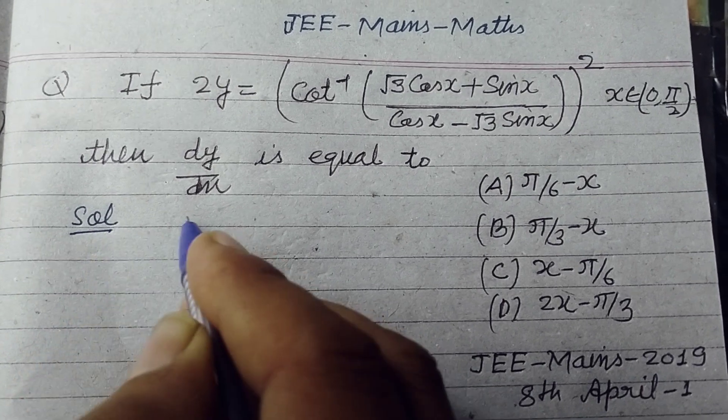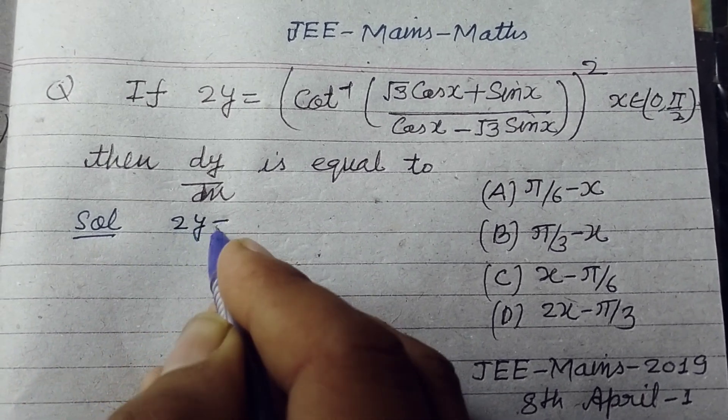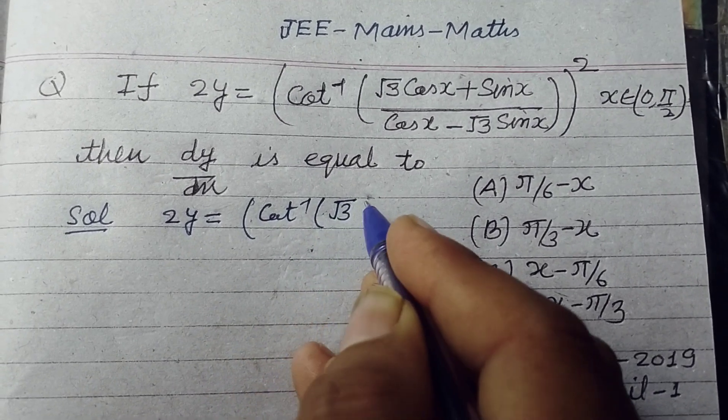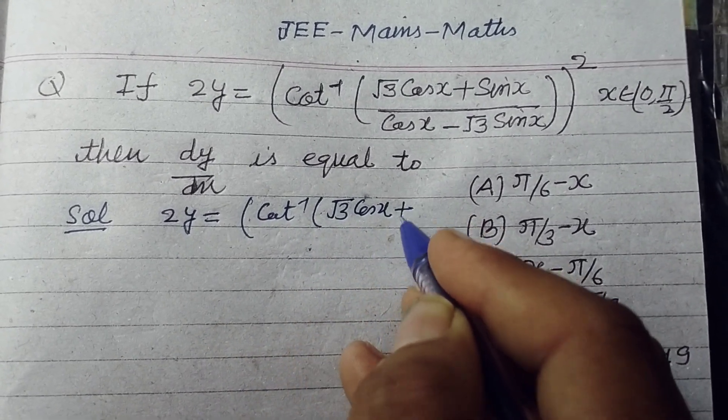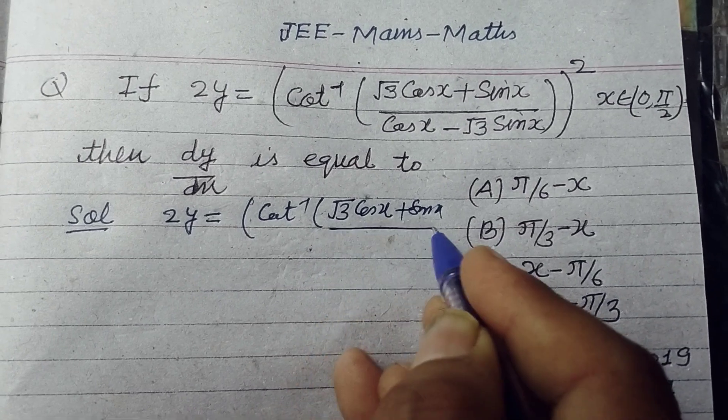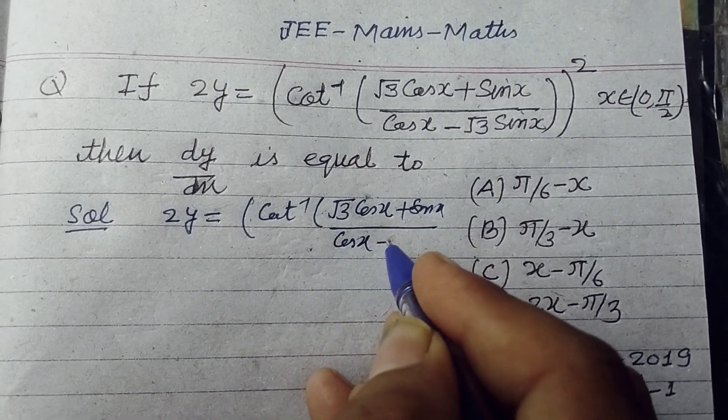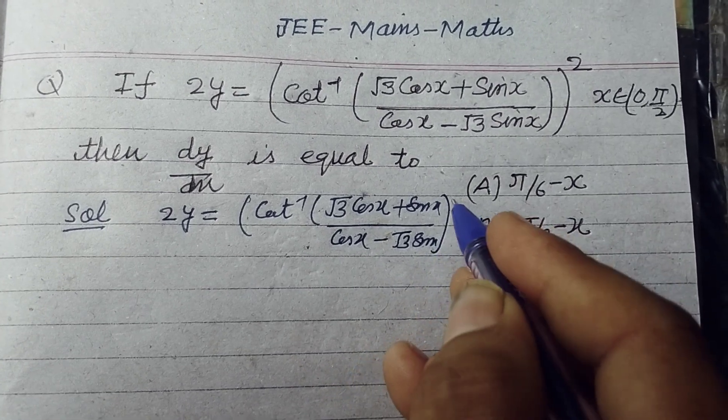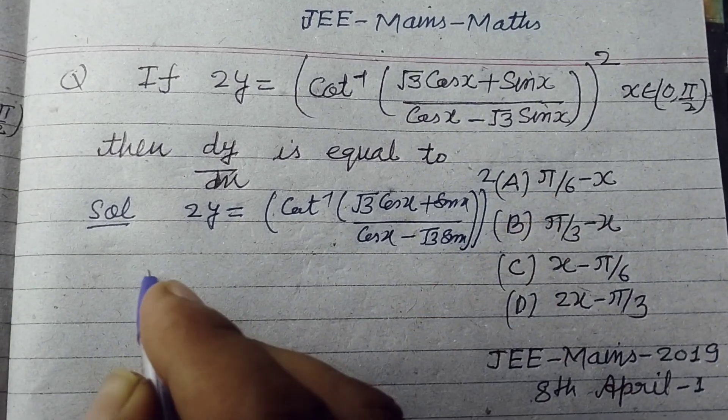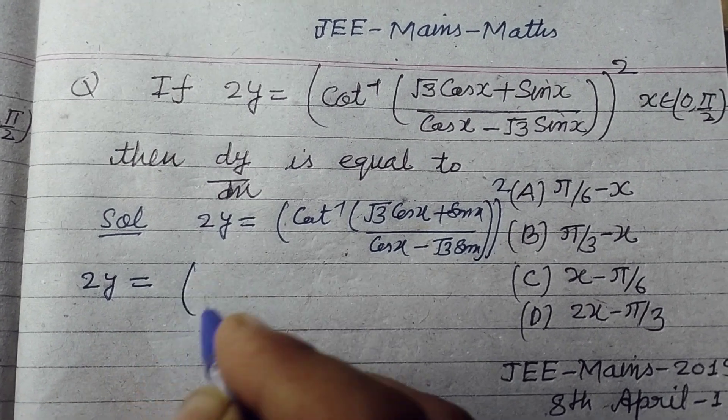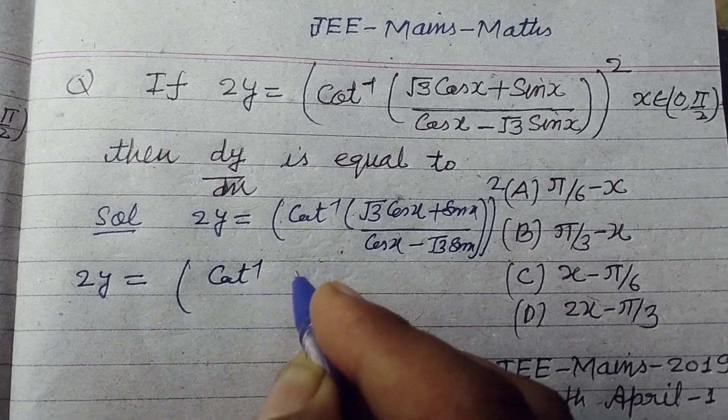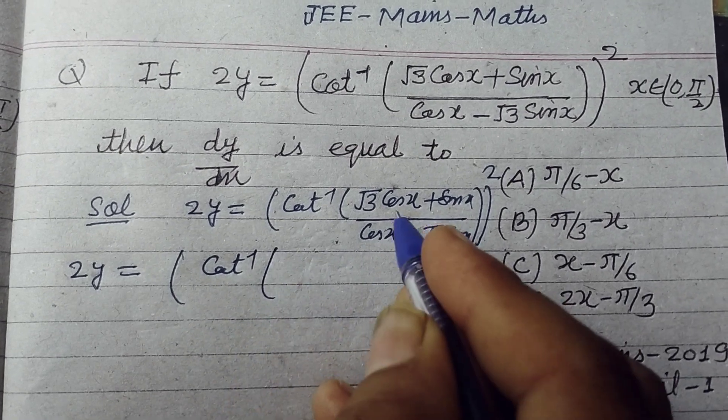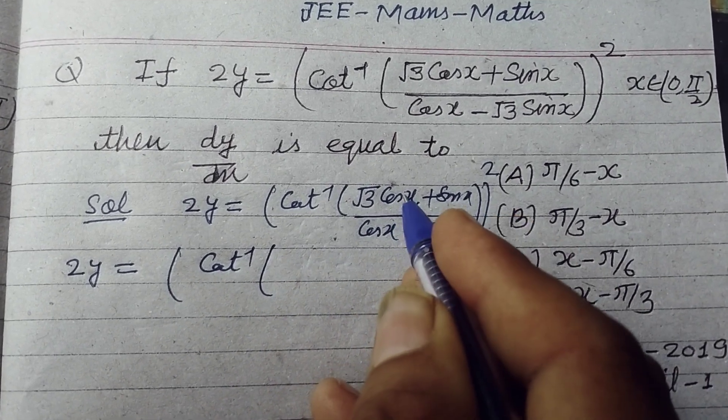So students, 2y equals cot inverse of √3 cos x plus sin x upon cos x minus √3 sin x whole square. First we write this as, taking cos x common from numerator and denominator, so this will be √3 plus sin x upon cos x, and 1 minus √3 sin x over cos x, whole square.